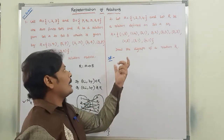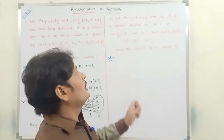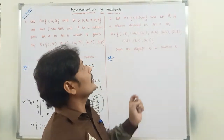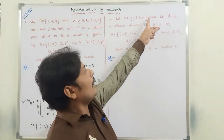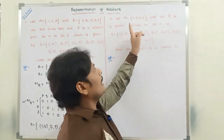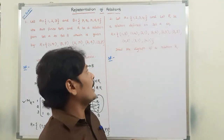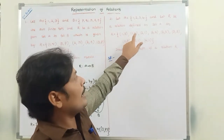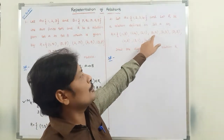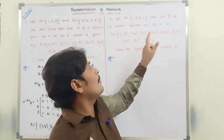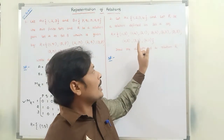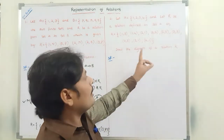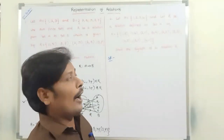Now we go to the second problem. Let A be equal to {1, 2, 3, 4} and let R be a relation defined on set A as R = {(1,3), (1,4), (2,1), (2,2), (2,3), (3,3), (3,1), (4,3), (4,1)}. Draw the diagram of relation R.